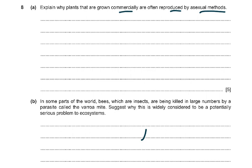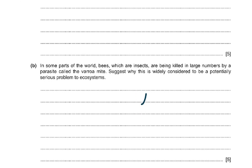Question 8b: bees are being killed in large numbers by a parasite — suggest why this is a potentially serious problem to ecosystems. Bees are pollinators, so fewer bees means reduced crop yields and fewer seeds, leading to fewer plants. Less plant material means less food for herbivores; food chains are disrupted, reducing biodiversity. Honey production is also reduced.